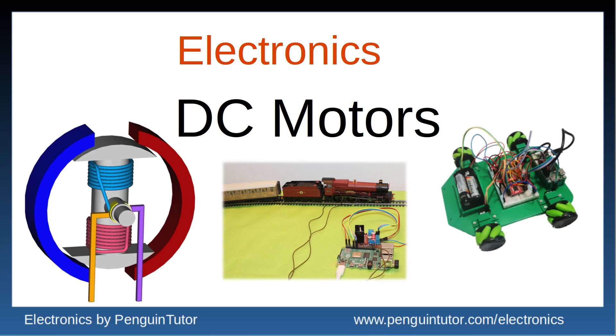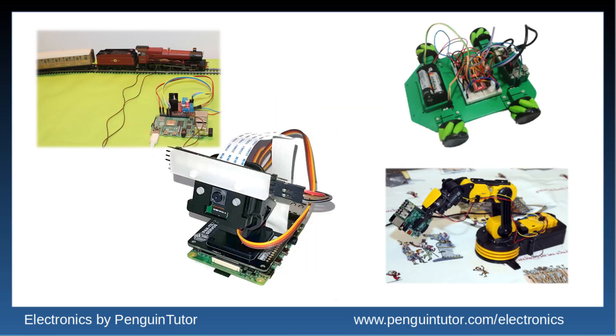You'll find DC motors in many projects including model railways, robots, and pan and tilt features on a camera. The model railway typically uses a brushed DC motor, as does wheeled robots. In this case it has multiple motors controlling the wheels, a robot arm, and the pan and tilt for the Raspberry Pi camera often use servo motors.